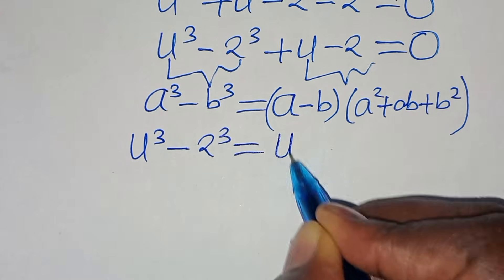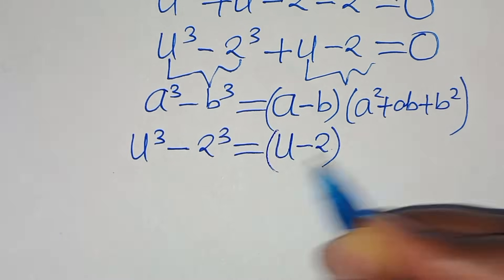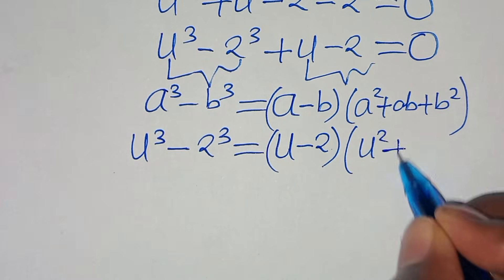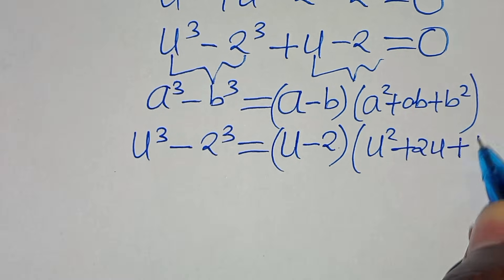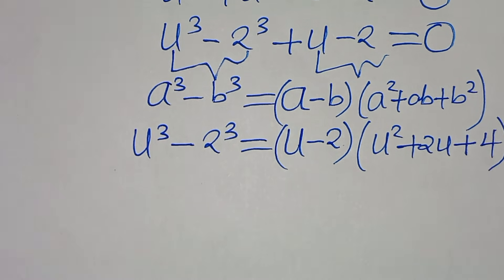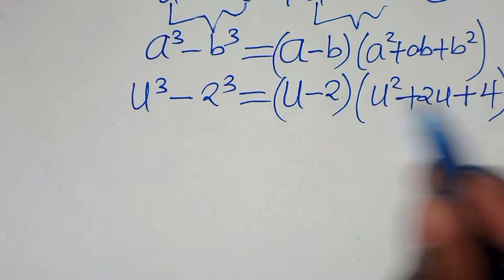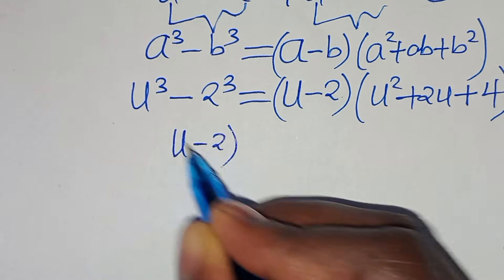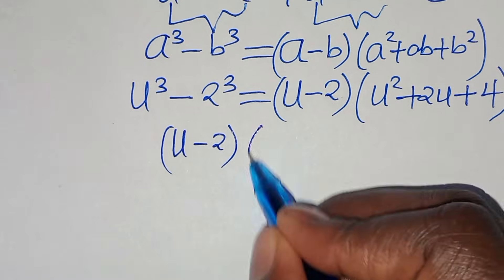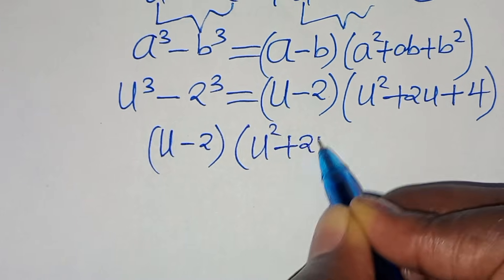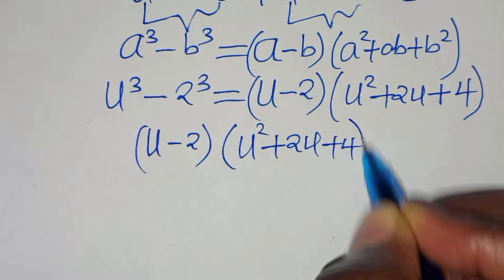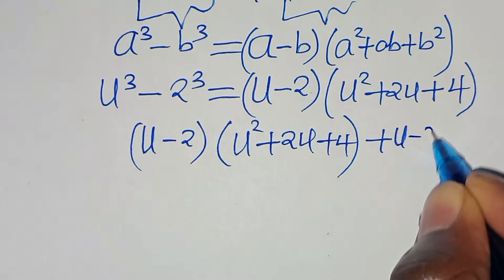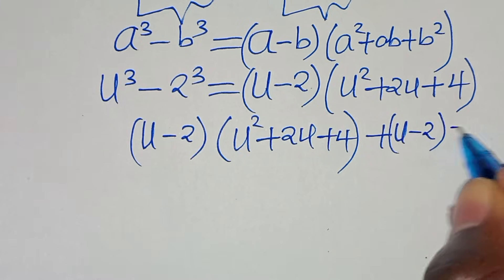This is the same thing as u minus 2, multiplied by u squared plus 2u plus 4, then plus u minus 2, equals 0.